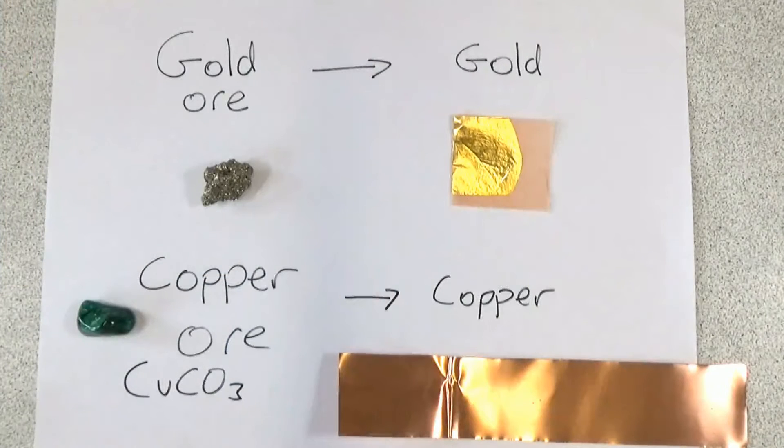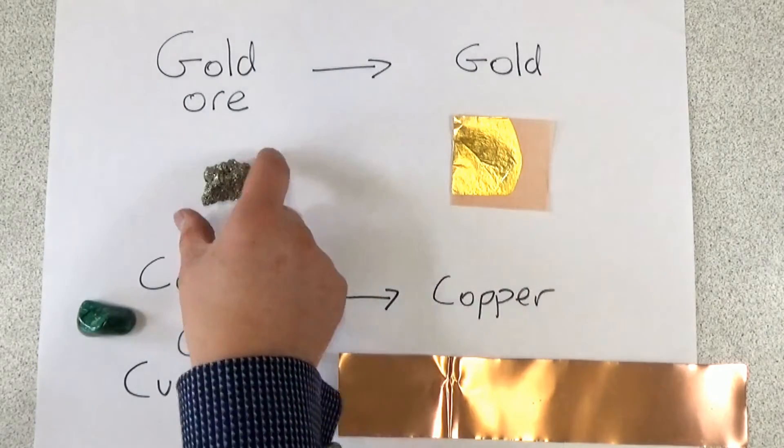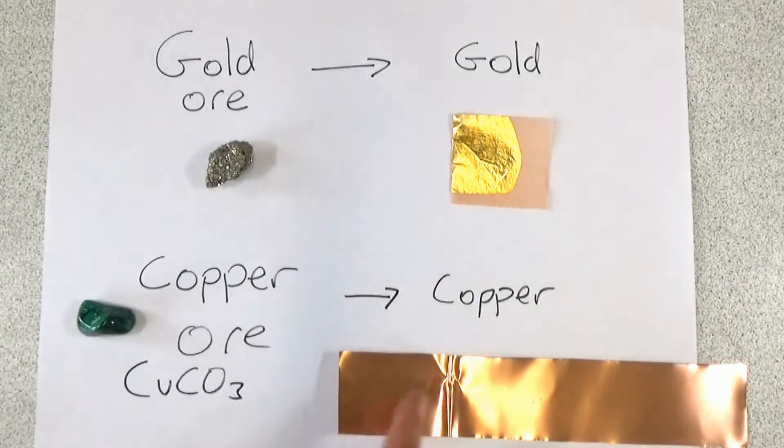We've first got to remember where we get metals from and metals come from rocks in the ground. Now a rock that contains enough of the metal to make it worth extracting is called an ore. So we can see here we get gold from this rock which is gold ore and we get copper from this rock which is copper ore.